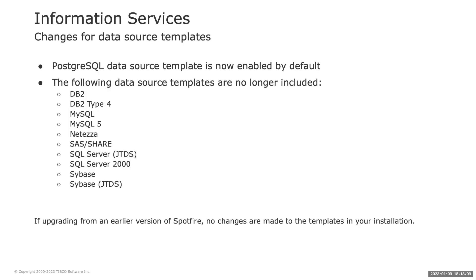For information services, starting with Spotfire 12.2, for new installations of Spotfire we made changes to the included data source templates. PostgreSQL is now the data source template enabled by default, and we no longer include other templates such as DB2 Type 4 and others listed. This change affects only new installations of Spotfire Server — if you are upgrading from an earlier version, no changes are made to the templates in your existing installation.